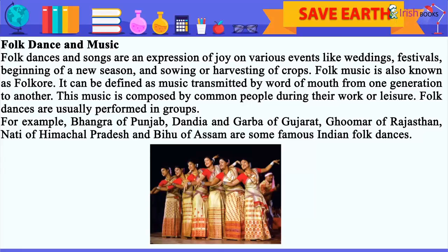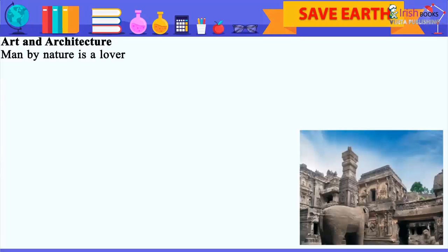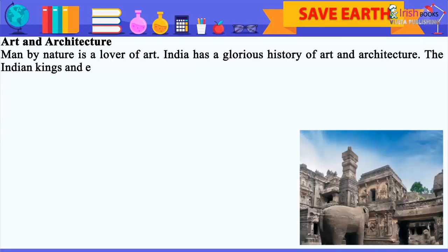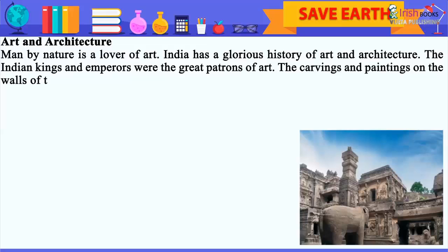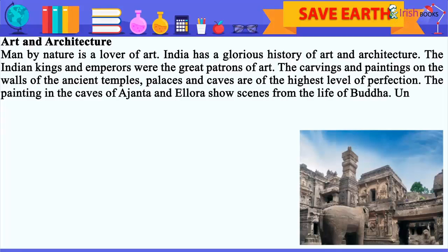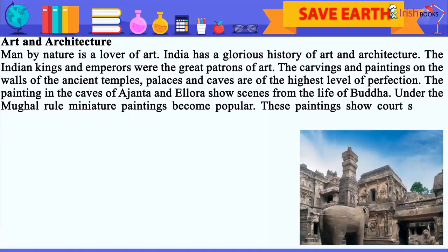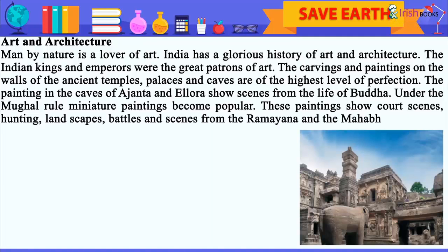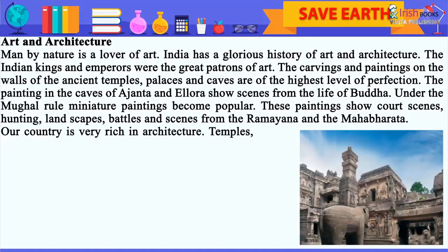Man by nature is a lover of art. India has a glorious history of art and architecture. The Indian kings and emperors were great patrons of art. The carvings and paintings on the walls of ancient temples, palaces and caves are of the highest level of perfection. The paintings in the caves of Ajanta and Ellora show scenes from the life of Buddha. Under the Mughal rule, miniature paintings became popular. These paintings show court scenes, hunting, landscapes, battles, and scenes from the Ramayana and the Mahabharata.